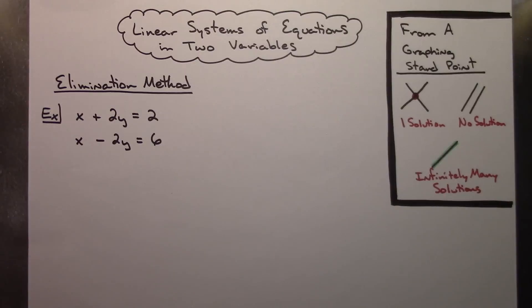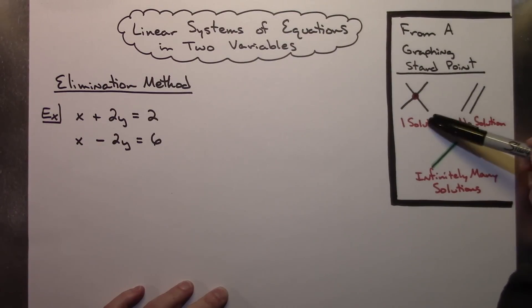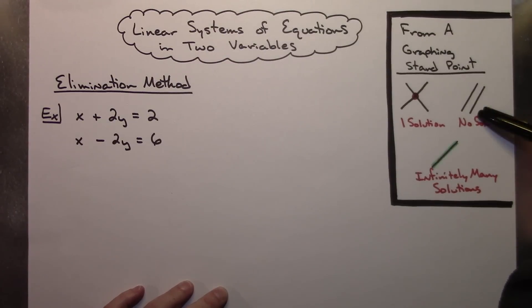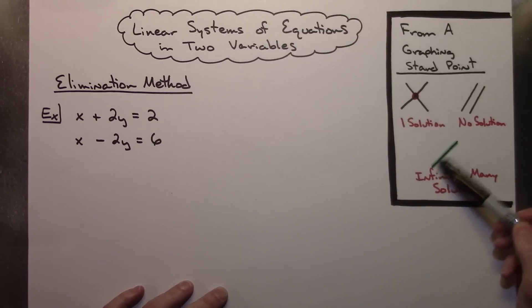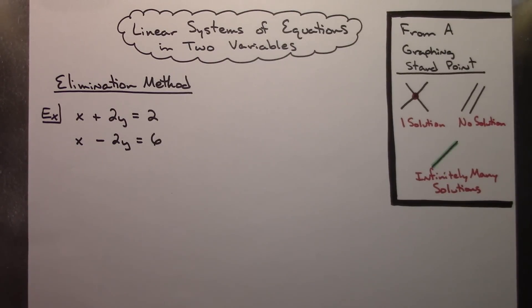We're going to be taking a look at linear systems of equations in two variables today. Before we start, I'd like to look at the fact that if we were to graph our two linear equations we've got three different scenarios. If we graph them and they cross, they would cross in one place and we would have one solution. If they turn out to be parallel, we would have no solution. And if one line is on top of the other, we would have infinitely many solutions.